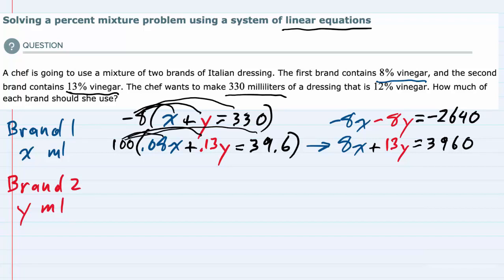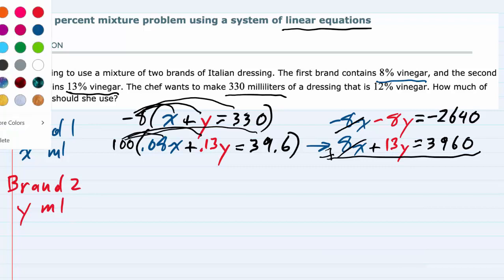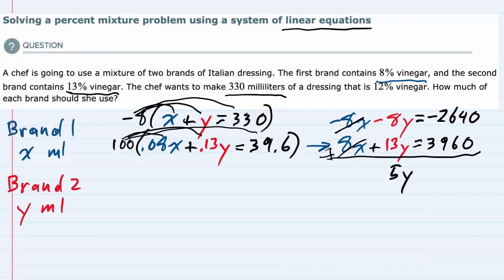Now I can add these two equations, and the x values will cancel. On the left side, -8y plus 13y gives me 5y. On the right side, I get 1320. Solving for y by dividing both sides by 5 gives me y = 264.